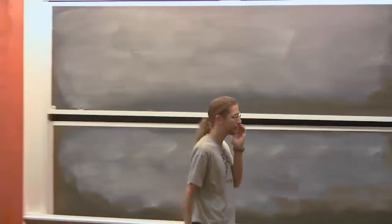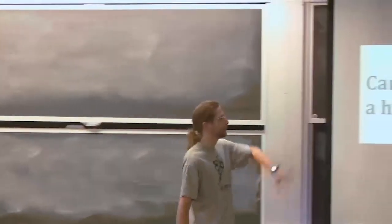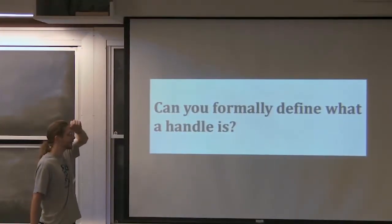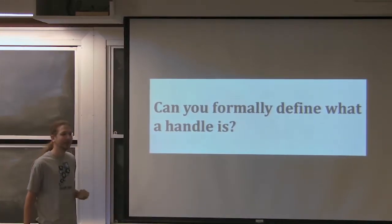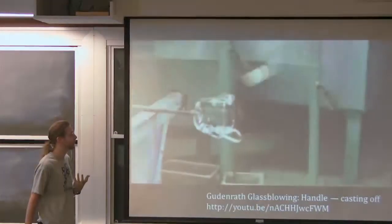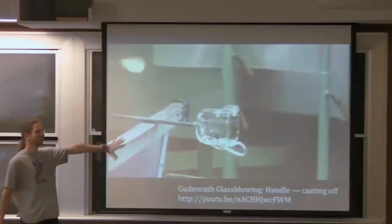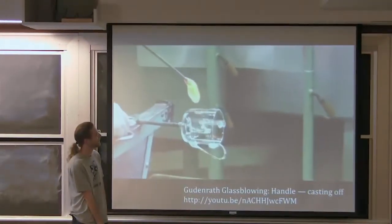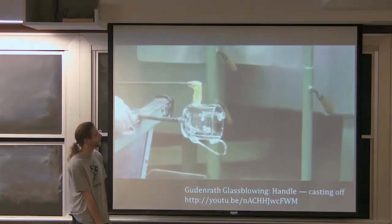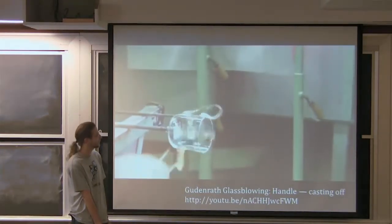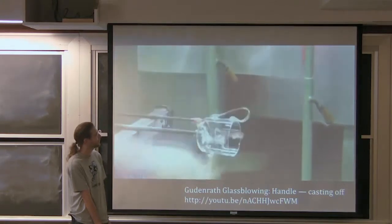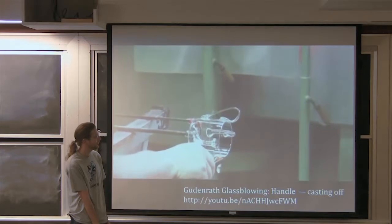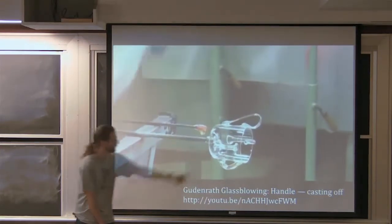We start with a few basic questions. First is a topology question: what is a handle? In general, a handle is really a transformation on the surface. I'll demonstrate in the context of glassblowing. This is what it looks like if you're making a cup. You take some hot glass, attach it to your surface, cut it off your hot pipe, and then bring it around and attach it to another point. And so that's a handle.